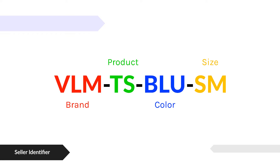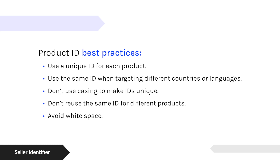A lot of times the SKU could be randomly assigned, but the main point of a SKU is that it's unique. Here we have a list of some common rules from Google, and a lot of these are similar with other channels, but sometimes it's specific to the channel. For Google, they want you to use a unique ID for each product because they're going to be tracking the performance of that item based on that SKU that you give them.